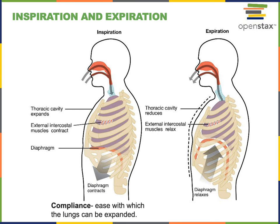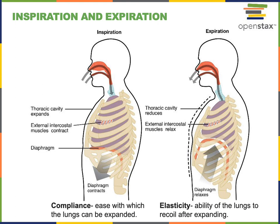How easily the lungs can expand during inspiration is called compliance — a measurement of the ease of expansion. If the lung becomes scarred (pulmonary fibrosis), or if the lung linings swell (edema, pleurisy), it becomes more difficult for the lung to stretch, decreasing compliance. Decreased pulmonary compliance is a type of restrictive pulmonary disorder, where the ability to inflate the lungs is impaired. The ability of the lungs to return to their original size after expanding — to recoil after stretching — is the elasticity of the lungs.